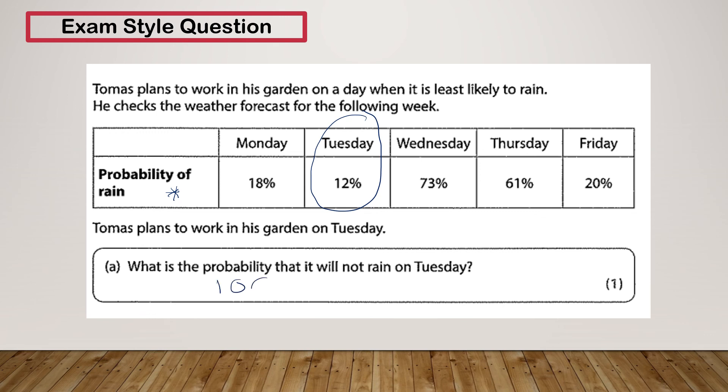So there's a 100% chance that it either will rain or won't rain. So by doing 100 take away 12, we get 88. So there's an 88% chance that it will not rain on Tuesday.